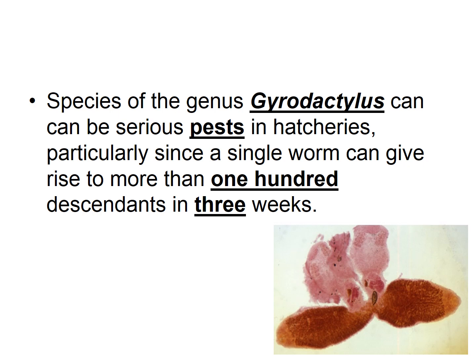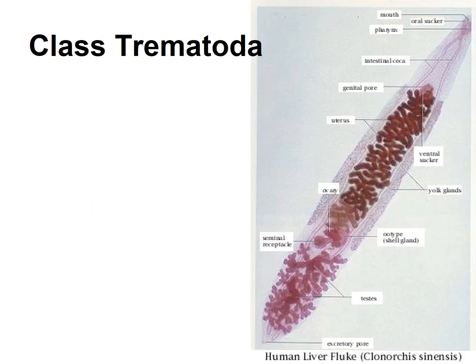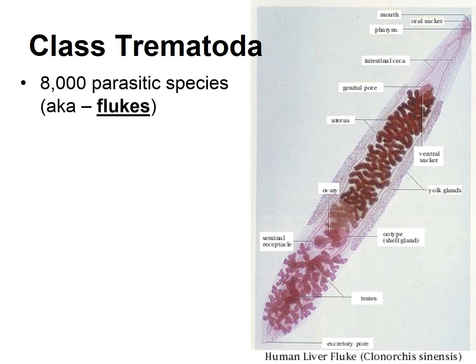There's a species in the genus Gyrodactylus that can be a serious pest in fish hatcheries, since a single worm can give rise to more than a hundred descendants in three weeks — quite a problem if there's an infestation. Our next class of parasitic flatworms is Class Trematoda — there are about 8,000 parasitic species called flukes.